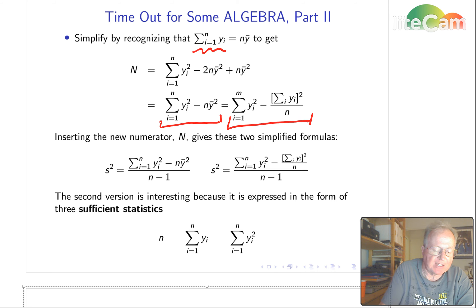Once we take that new numerator and plug it into the formula, we get these two equivalent formulas. One that uses the mean and one that uses the sum of the observations. The second one is interesting because it's using what are called sufficient statistics. Learn more about those in graduate school.